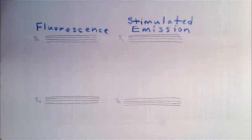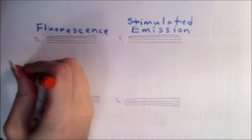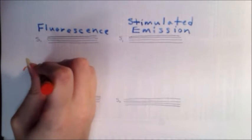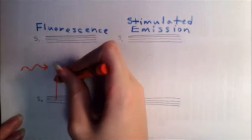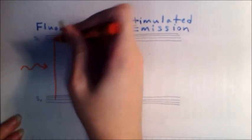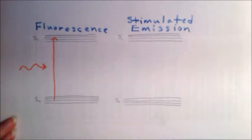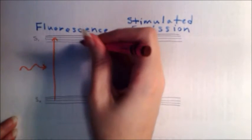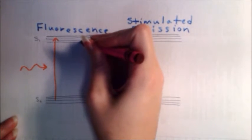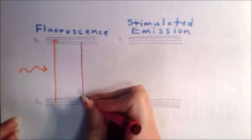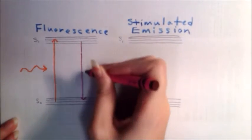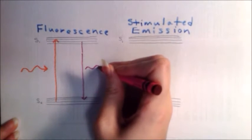Before getting into the specifics of STED microscopy, we must first understand the difference between fluorescence and stimulated emission. During the fluorescence process, a fluorophore absorbs the energy of an excitation photon and goes from its ground state to a higher energy excited state. After that fluorophore's specific fluorescence lifetime, which lasts several nanoseconds, it will spontaneously return to its lower energy state, releasing a fluorescence photon.